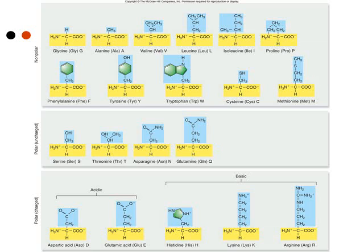These different R groups give the amino acids different properties. The top box includes amino acids that are non-polar, so those amino acids are hydrophobic. The middle group of amino acids are polar molecules, so these amino acids are hydrophilic — water-loving. The final group at the bottom, those five amino acids including aspartic acid and glutamic acid, are polar molecules that have a charge. Some have a negative charge, or they're acidic. The other three amino acids have a positive charge, or they're basic.